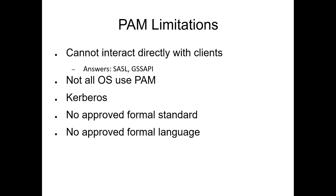One of the really annoying things about PAM is there is no approved formal standard. There's an X/Open document from 1997 that is generally regarded as the defining standard, but no certifying body has declared it official. As a result, there's no official approved language for the various parts of a PAM rule. A rule could be called a type or a facility — many people on the internet have invented their own language for describing the parts of PAM rules.